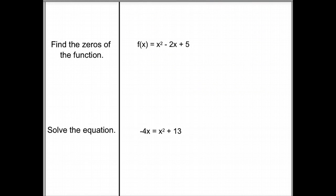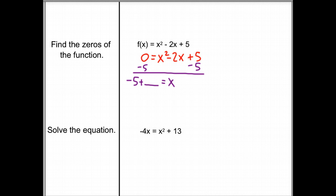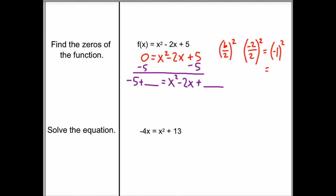Find the zeros of the function. We want to set 0 equal to x squared minus 2x plus 5. Now we subtract 5 to get: negative 5 plus blank equals x squared minus 2x plus blank. It's our job to fill in the blank with b over 2 squared. Our b is equal to negative 2, so we have negative 2 over 2 squared,